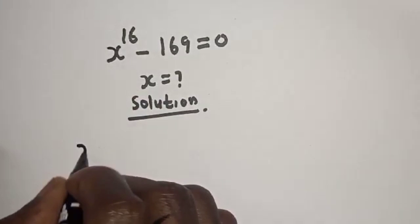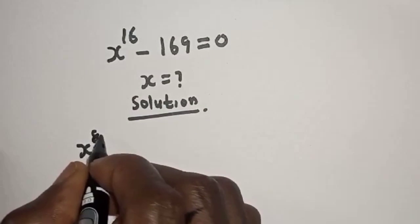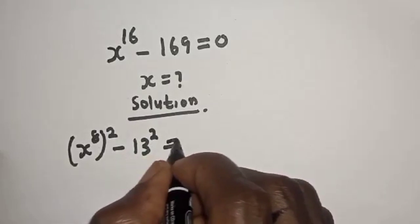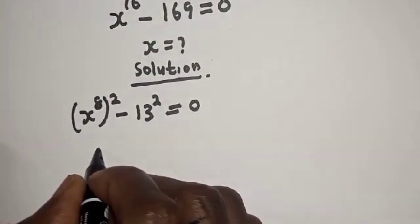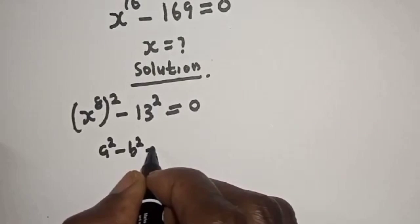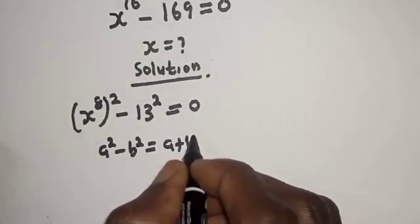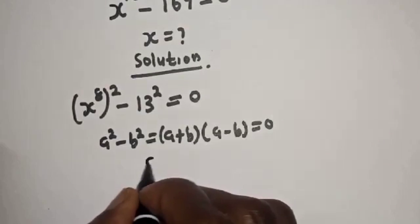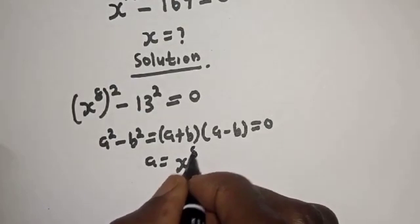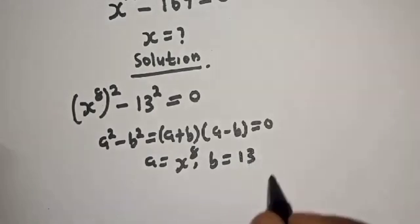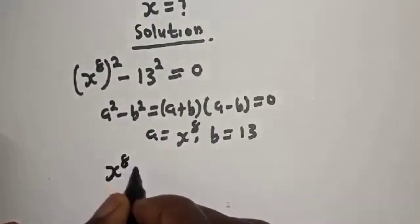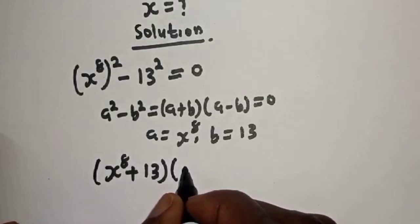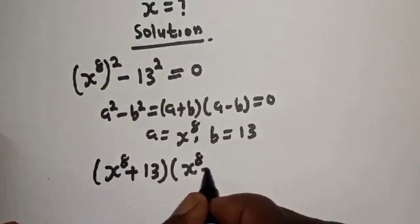s raised to power 16 can be written as s raised to power 8 squared, minus 169 can be written as 13 squared, is equal to 0. Take note of the rule that a squared minus b squared is equal to a plus b multiplied by a minus b, where a is equal to s raised to power 8 and b is equal to 13.